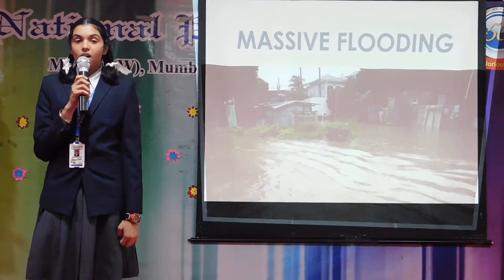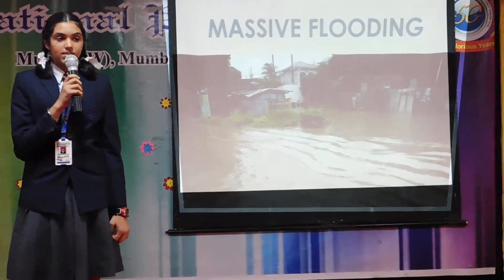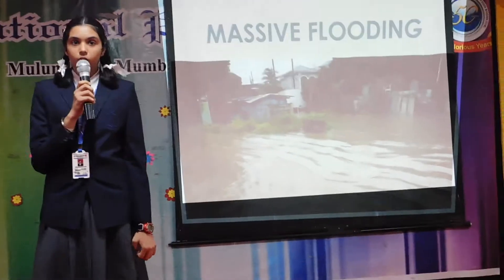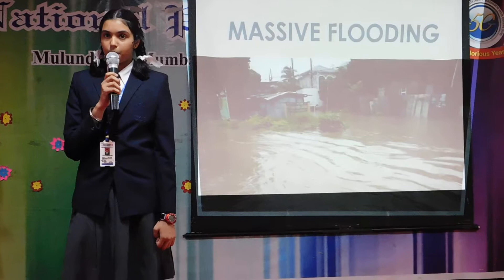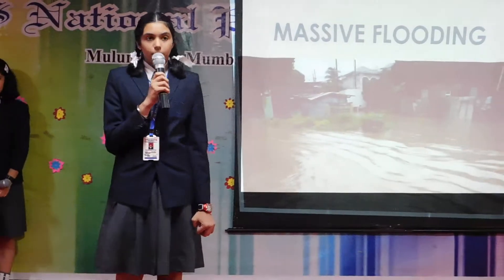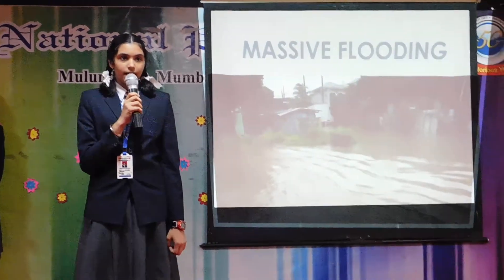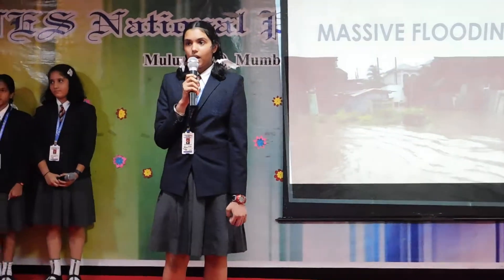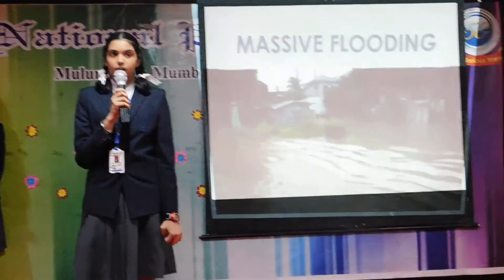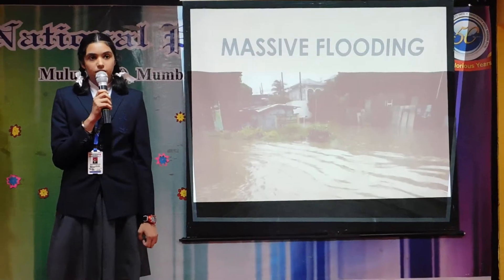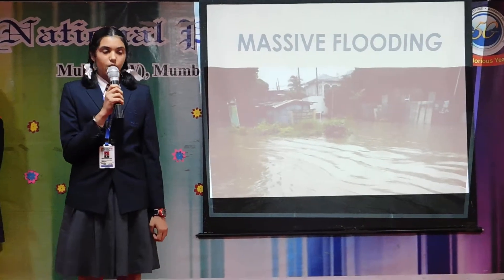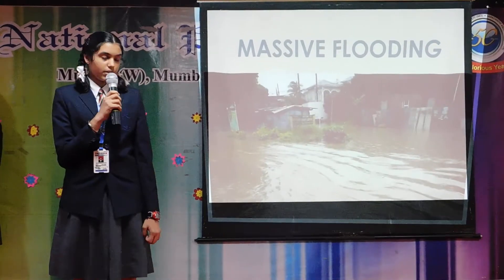Flooding in Assam is caused by the influence of the Brahmaputra River. During flooding, fresh water is carried away along with dirt, dust, etc., into the seas and oceans, causing the depletion of rivers.